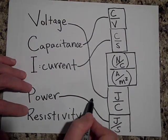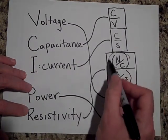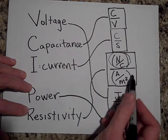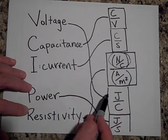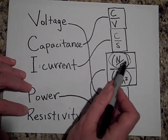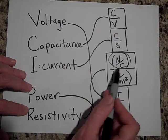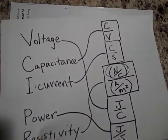Resistivity is how much electric field you need per given current density. So that's electric field per current density. So yeah, those are two more: electric field, current density. Alright, next one.